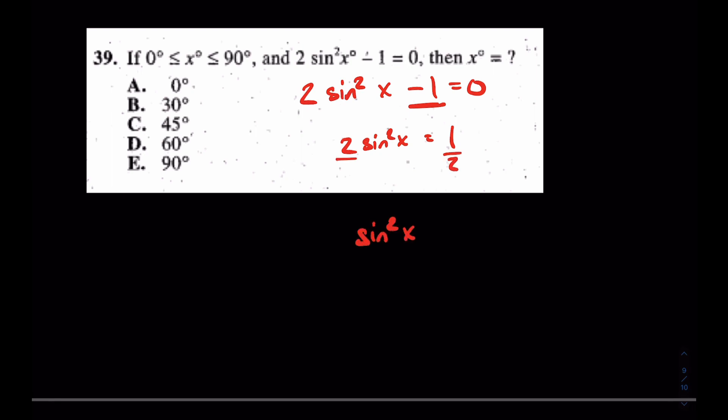sin²x = 1/2. And now, I'm going to square root both sides. Square root, square root.